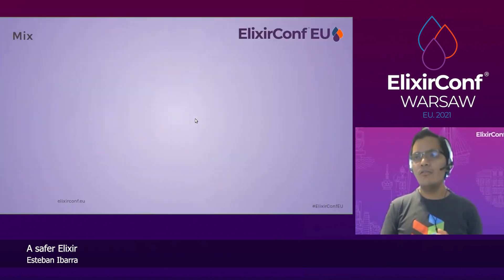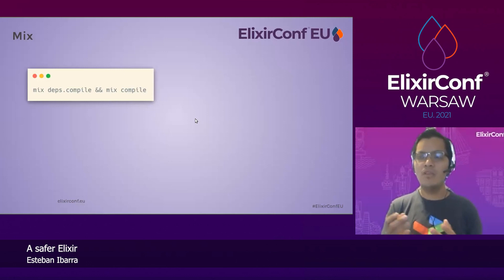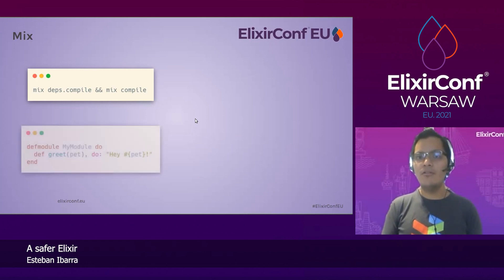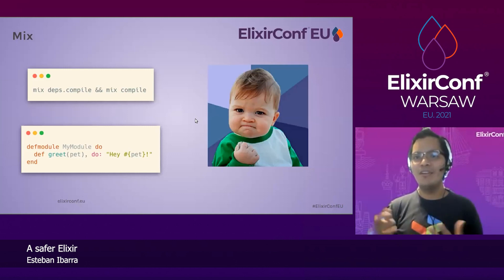Mix is Elixir's build tool that allows us to create projects, manage dependencies, run tasks, and more. One important thing is that we can compile our project dependencies separately from our own code. We can run `mix deps.compile` and then compile our project code itself. Here's a simple example with a module called MyModule that reads a pet — and that compiles just fine.